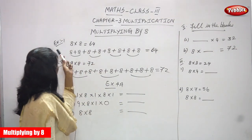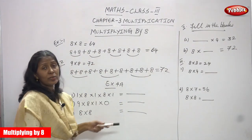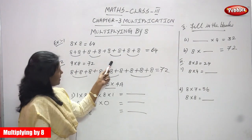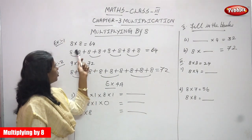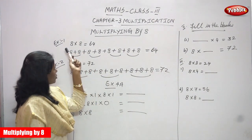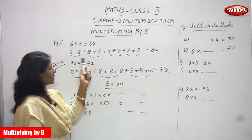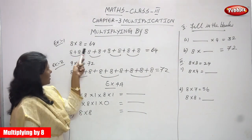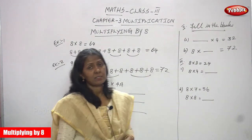Multiplying by 8. Example 1: 8 into 8 is equal to 64, and this is the same answer you will get. The first method is multiplication, and the second one is the repeated addition method. So 8 into 8, you know the answer is 64.